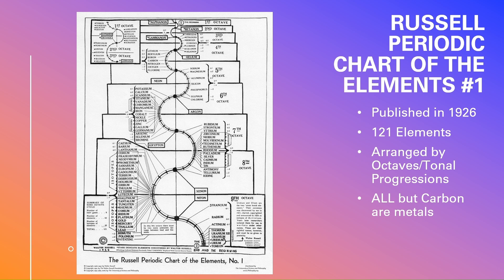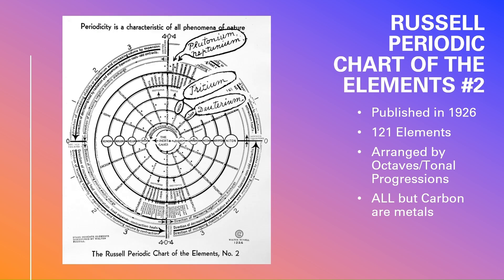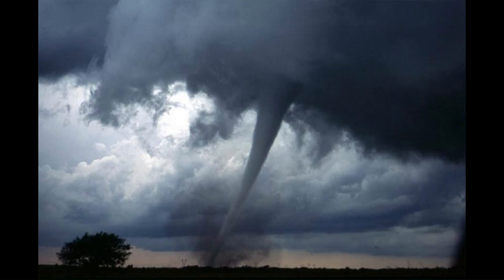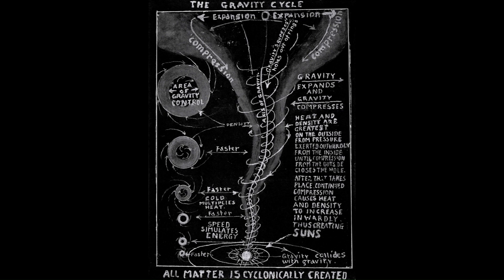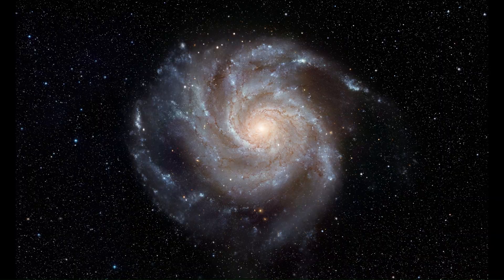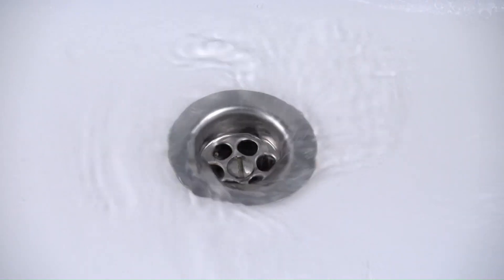In chart number two, we see the same information as chart number one — it's just a different perspective. So if we look back at chart number one, this is really a side perspective view of an opening vortex, like seeing a tornado or cyclone from its side. Whereas in chart number two, we're looking down from the top, down into the cyclone or vortex, very much like watching water go down your drain.